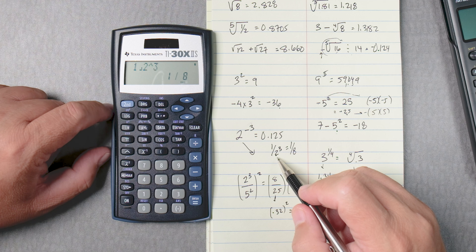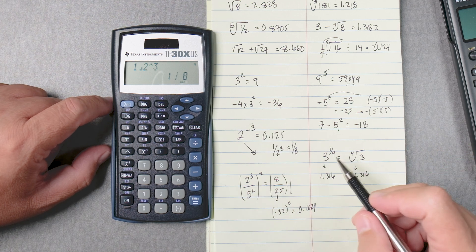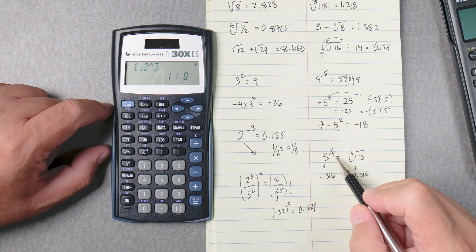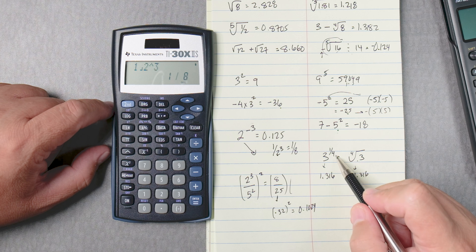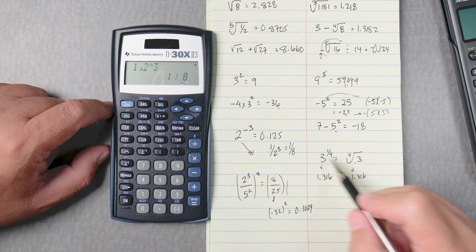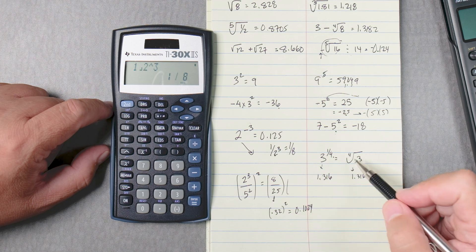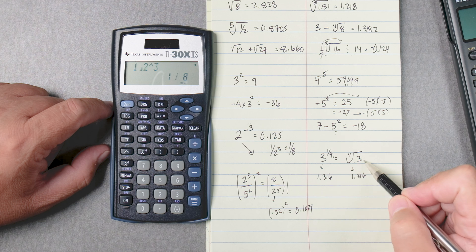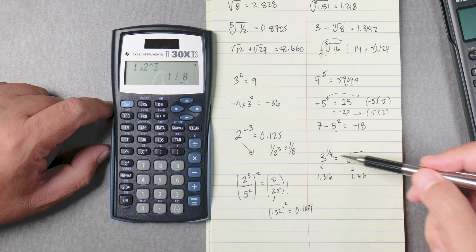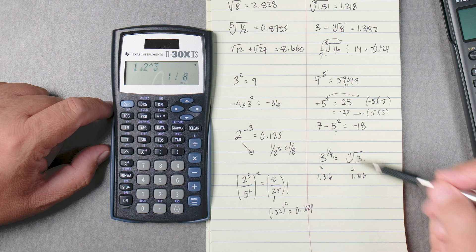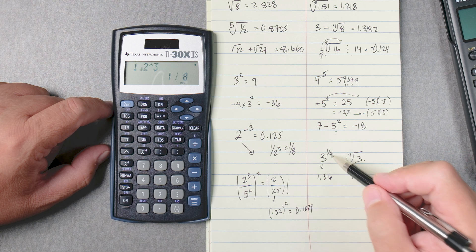Okay, so let's move on to the next one, 3 to the 1/4. 3 to the 1/4 is really, this 4 is an index of 4, okay? So you can say the 4th root of 3. So you can see how these two are related, powers and roots. So 3 to the 1/4.